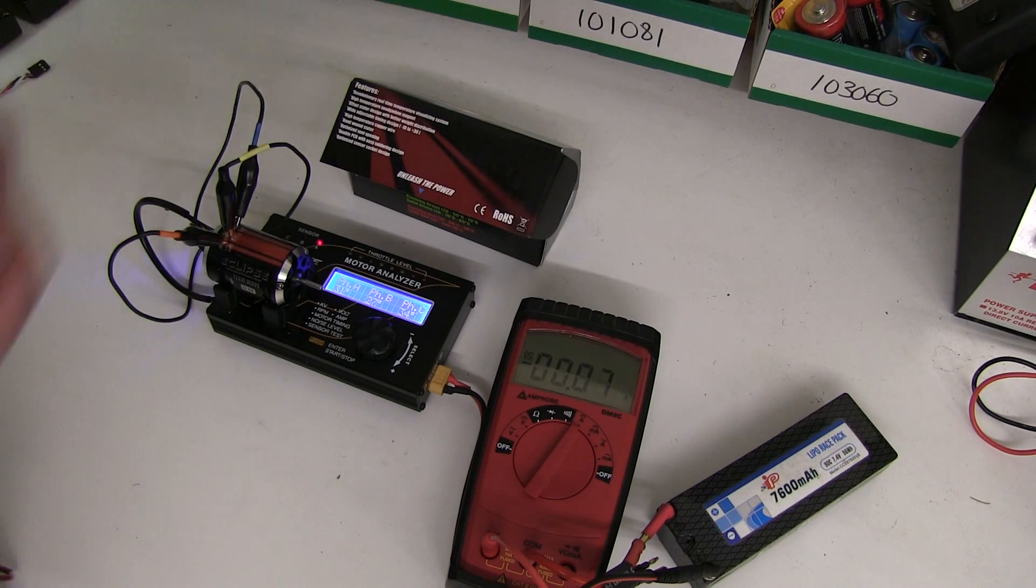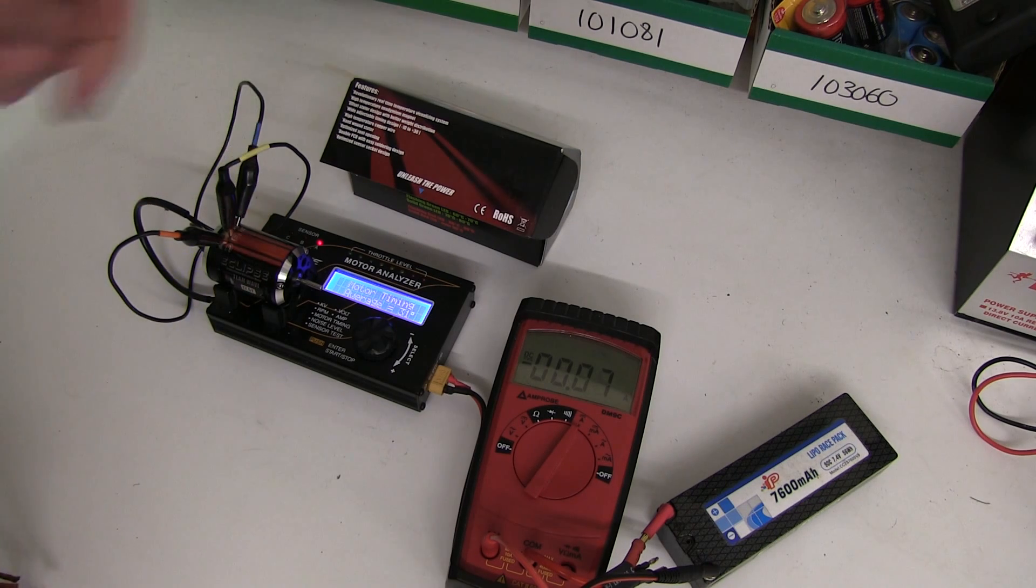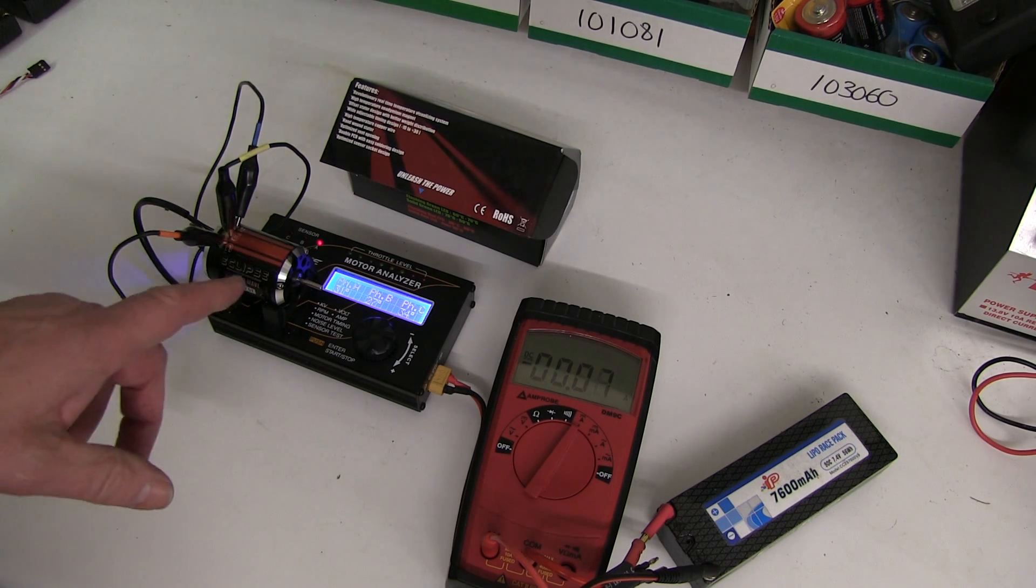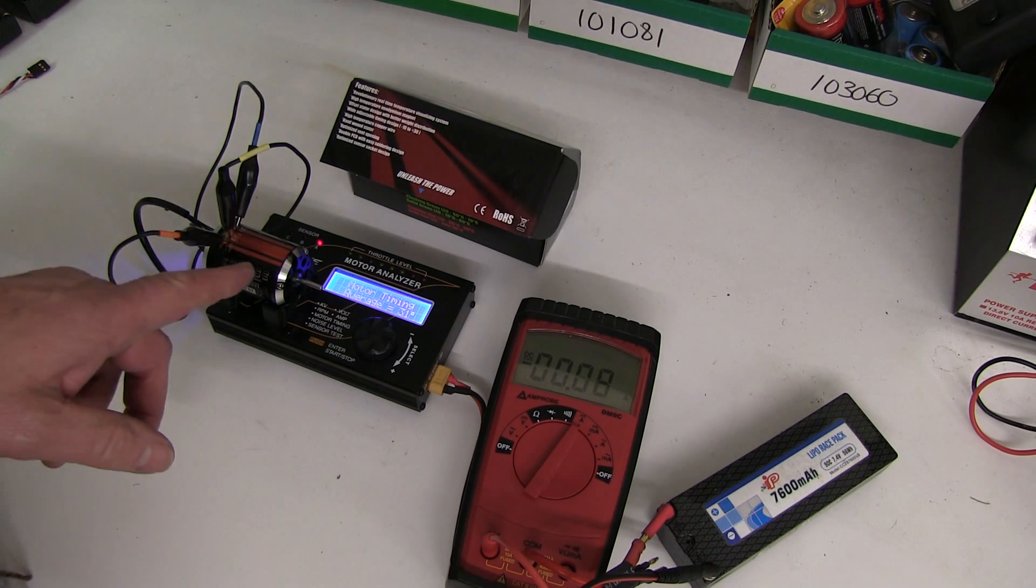So you've bought a new motor and you're going to do blinky racing with it. This is a 17.5 turn, and you've got to find a sweet spot on this motor to give you maximum performance.